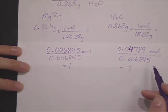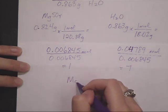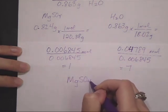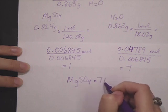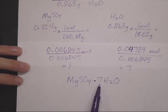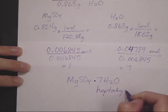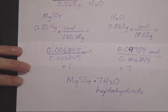So then we can write our formula, MgSO4·7H2O, and we would name this magnesium sulfate heptahydrate. There it is, that's the end of empirical formula, good luck.